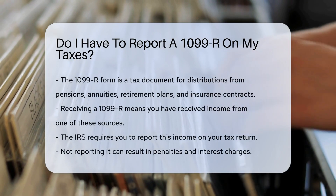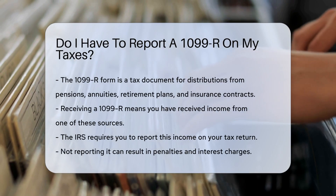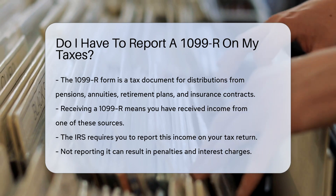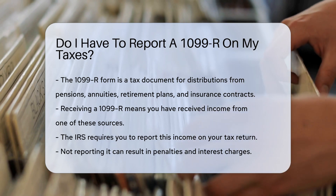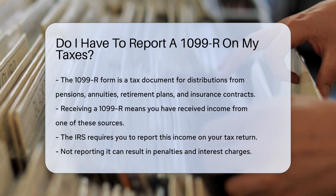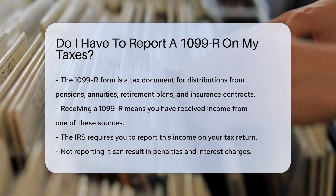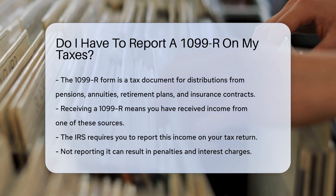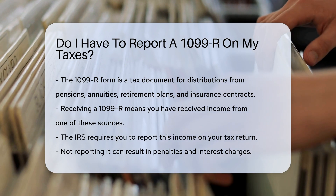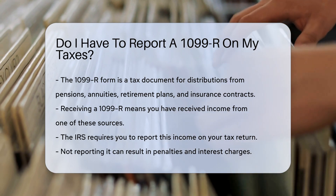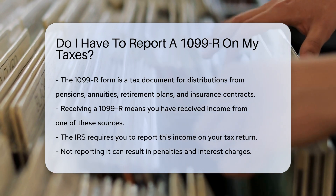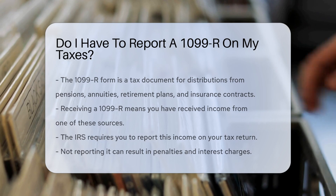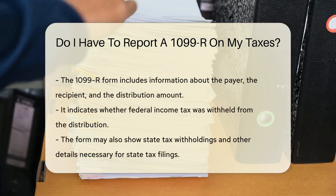The 1099-R form is a tax document issued for distributions from pensions, annuities, retirement plans, and insurance contracts. If you receive a 1099-R, it means you have received income from one of these sources. The IRS requires you to report this income on your tax return. Failing to report it can lead to penalties and interest charges.